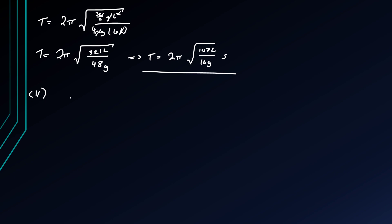So if we compare 2 pi root l over g equals 2 pi root 107l over 16g, we can just compare that. This must be the same as this, and so we end up with the simple equivalence that the length of the equivalent pendulum is 107l divided by 16 meters.